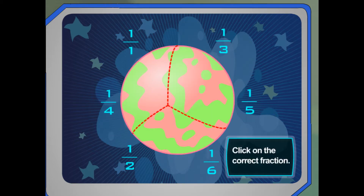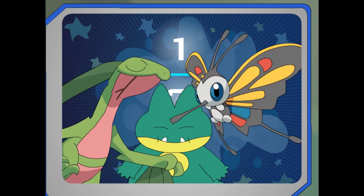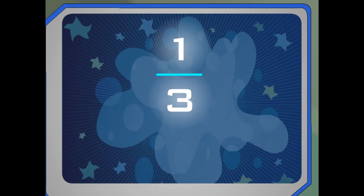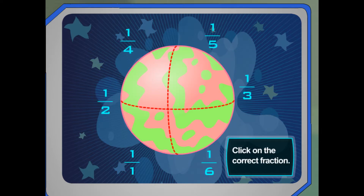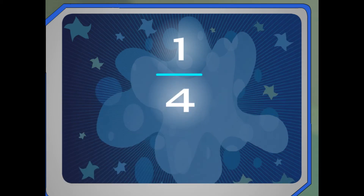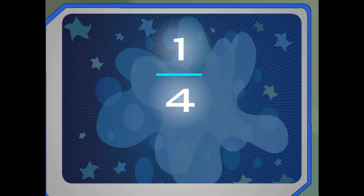What if we wanted to share the berry with three Pokémon? What fraction of the berry would each Pokémon get? If you split something in three, each piece is one-third. What if we wanted to share the berry with four Pokémon? What fraction of the berry would each Pokémon get? If you split something in four, each piece is one-fourth.